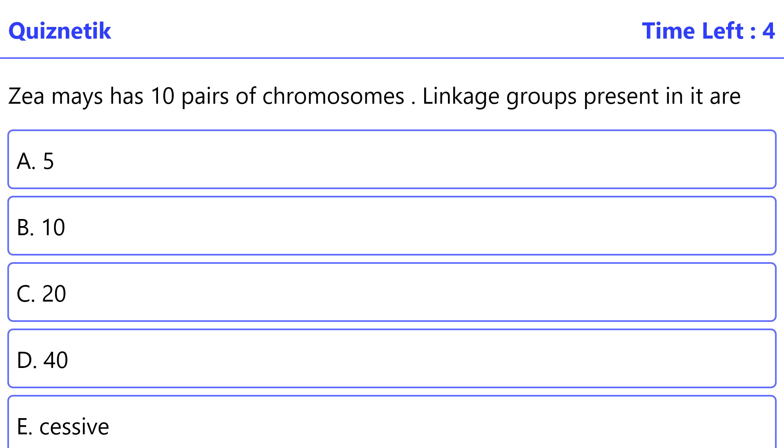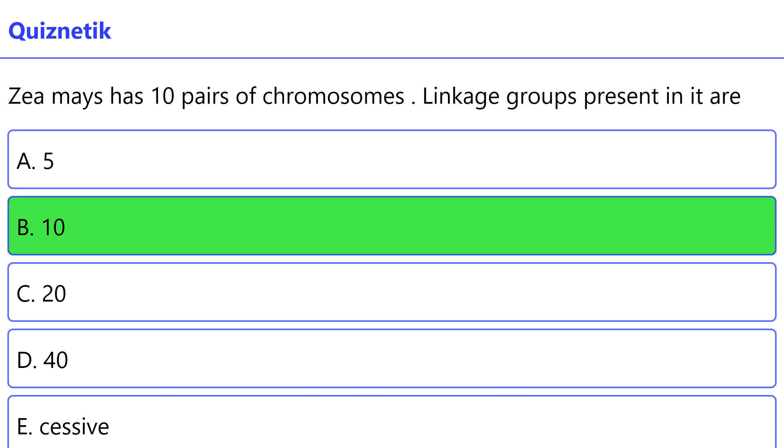CMase has 10 pairs of chromosomes. The number of linkage groups present in it — the correct option is B: 10.